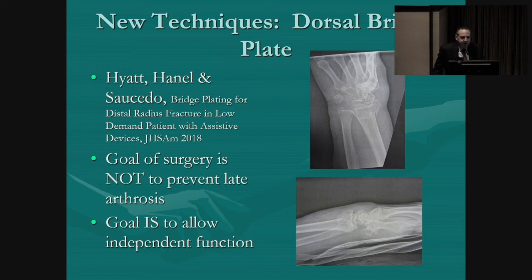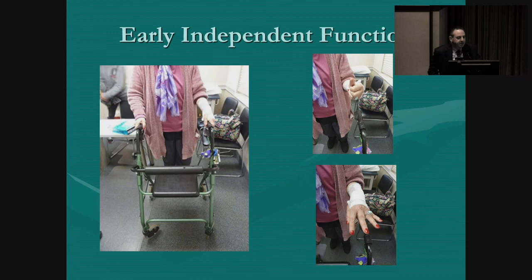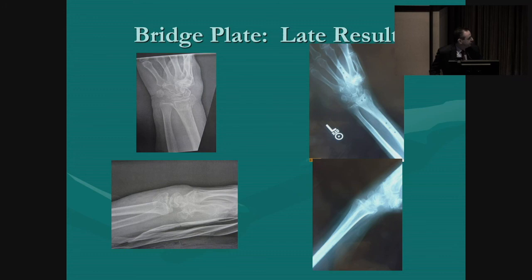The latest thinking about osteoporotic bone and distal radius fractures is that maybe we should be bridge plating a lot of these. Hannell and co-workers in Seattle published recently on bridge plating of distal radius fractures in people who use assistive devices. The goal is not to prevent late arthrosis — it is to allow early independent function. With a bad distal radius fracture, bridge plating with a plan to go back and take out the plate allows early independent function. The patient was up and about with her walker, had good motion in her fingers, and returned to independent function even with the plate still in. Late result showed a fairly smooth articular surface, and radiographically and clinically she looked pretty good — two operations, but no collapse.